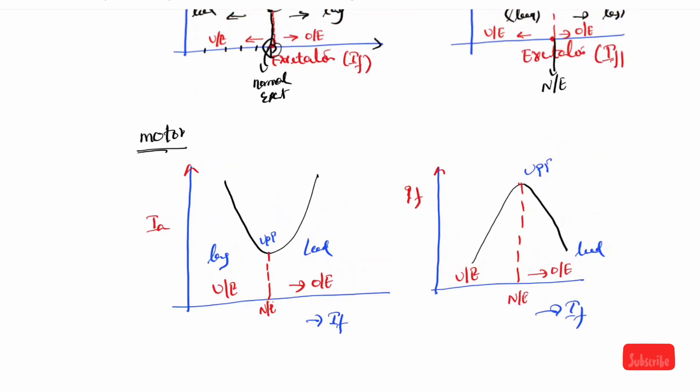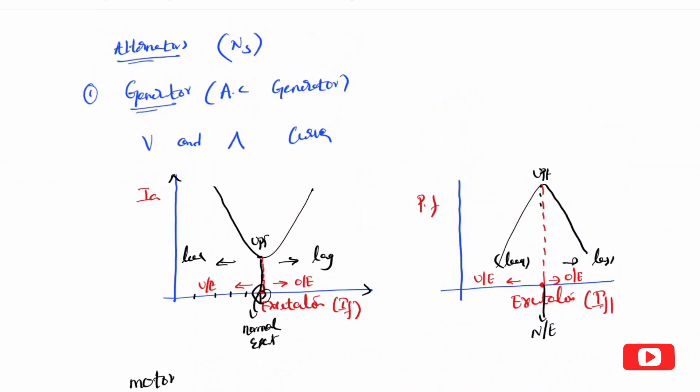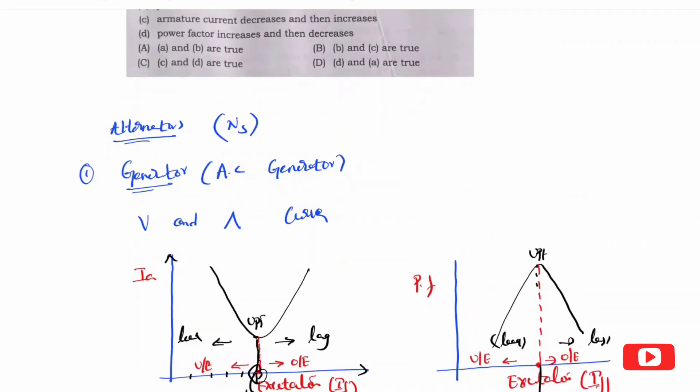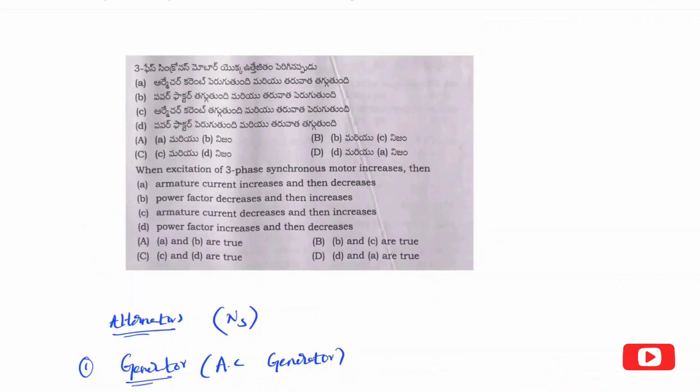Now let's look at the question. This concept will help you solve it easily. The question asks: When the excitation of a three-phase synchronous motor increases, then what happens? The options discuss armature current and power factor - whether they increase or decrease.